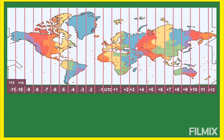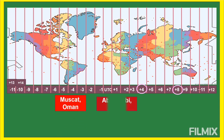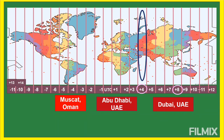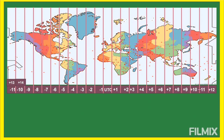Next are places at GMT+4, or UTC+4, meaning they are four hours ahead of UTC. Comparing to the Philippines at GMT+8, the Philippines is four hours ahead of these countries. These places include Muscat (Oman), Abu Dhabi (United Arab Emirates), and Dubai (United Arab Emirates). There are still other places on the map under GMT+4 that I didn't mention.